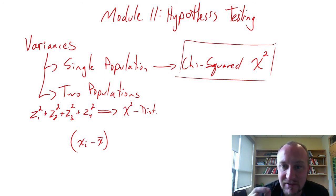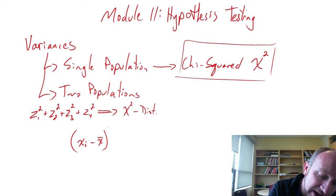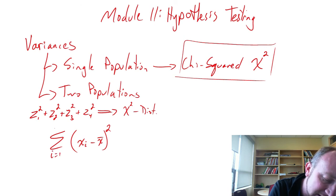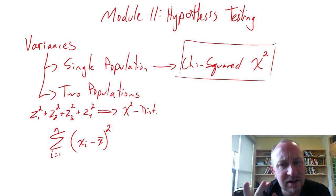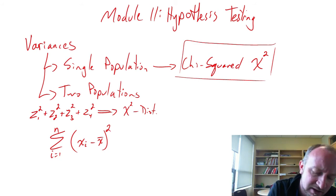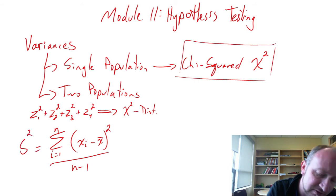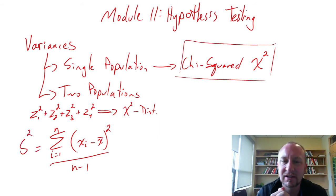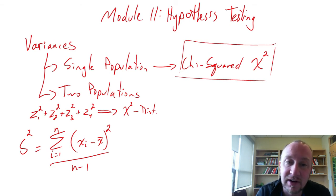Consider the individual observations' deviations from x-bar: those differences are normally distributed. If we square them and sum across i equals 1 through n, that should look familiar — divide by n minus 1 and we have our sample variance formula. So sample variances are sums of squared normal variables, meaning the distribution of sample variances follows the chi-squared distribution.